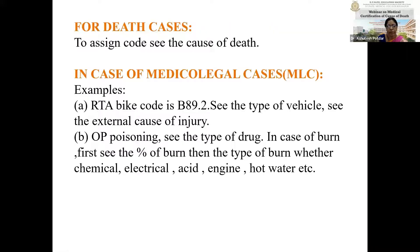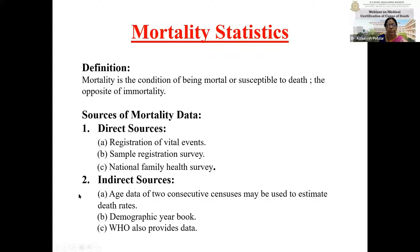This is all about ICD coding and how to assign the codes. Now, mortality is a condition of being mortal or susceptible to death — the opposite of immortality. Sources of mortality data: direct sources include registration of vital events, sample registration surveys, and national family health surveys. Indirect sources include age data of two consecutive censuses, which may be used to estimate death rates. The census is also a huge source of data for vital events.